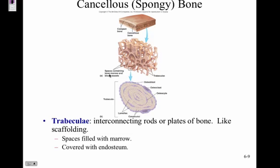Cancellous bone — also called spongy bone — has trabeculae, which are compared to scaffolding. These are rods or plates that form the bony lines, with spaces in between. All of this is covered with endosteum, which is a membrane lining the inside surfaces of bone.